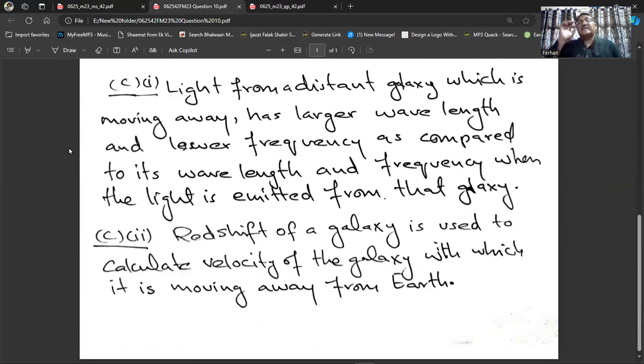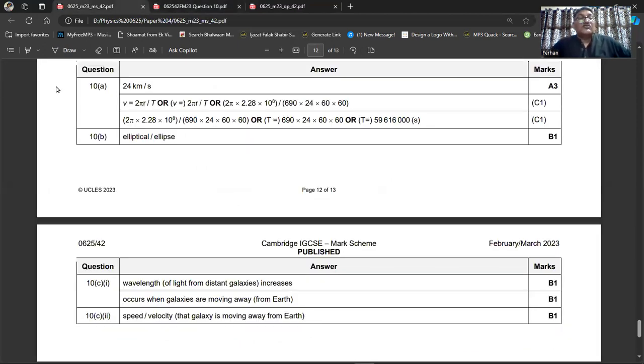Light from a distant galaxy which is moving away has larger wavelength and lower frequency as compared to its wavelength and frequency when the light is emitted from that galaxy. When it is emitted from the galaxy, its wavelength is smaller, its frequency is higher. But when it reaches earth, its wavelength becomes larger and its frequency becomes lower. This is called red shift.